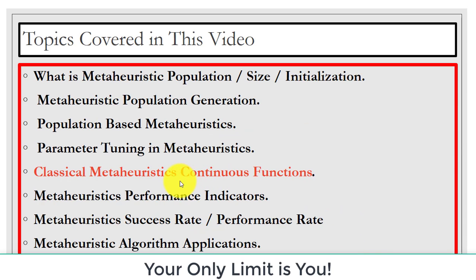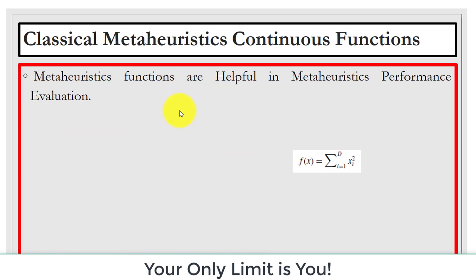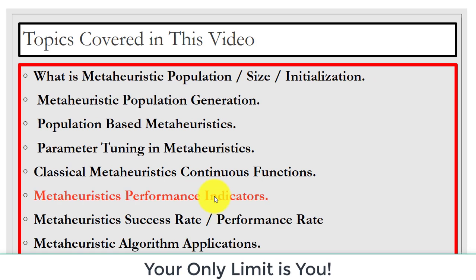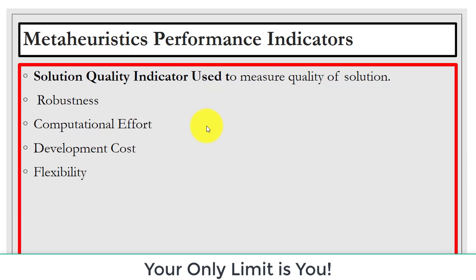Next is classical metaheuristic continuous functions. These are different benchmark functions used as objective functions in metaheuristic equations, which are helpful in performance evaluation. You can see different functions used in metaheuristic for performance evaluation. Regarding metaheuristic performance indicators, we have different indicators including solution quality indicator, which helps improve solution quality, as well as flexibility, development cost, computational effort, and robustness.